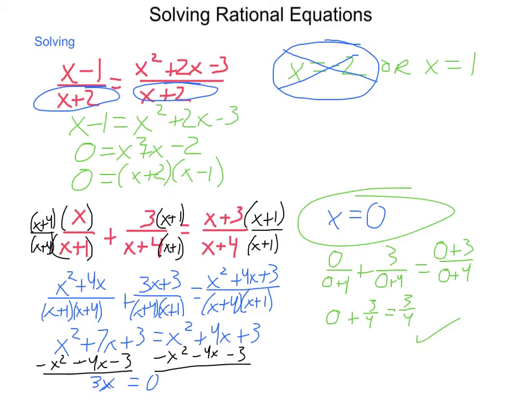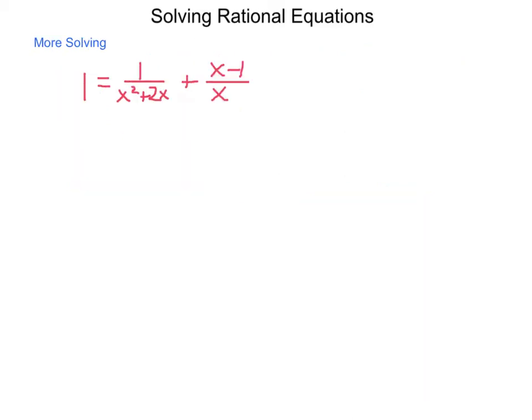So let's take a look at some more. Last one. 1 = 1/(x²+2x) + (x-1)/x. So first thing we need to do is find a common denominator. And to help get started on that, I'm going to factor the first denominator that you see. So x²+2x is x(x+2).